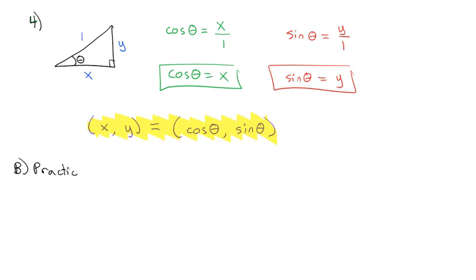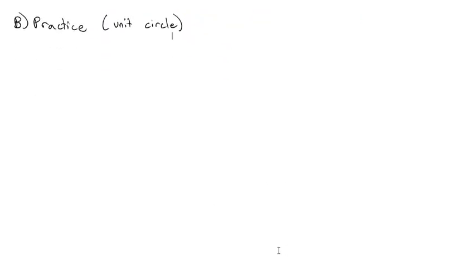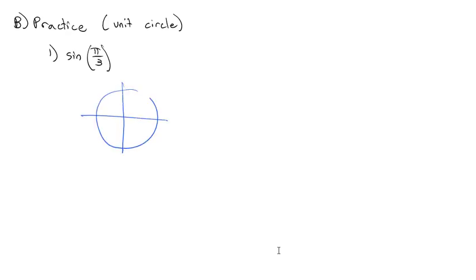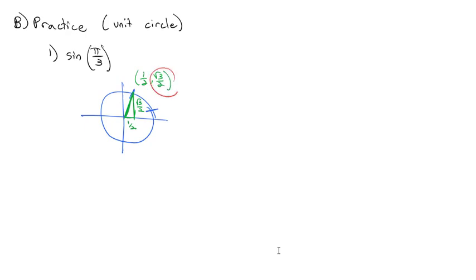Let's practice. Find the sine of π/3. π/3 is 2/6, so counting 2 sixths around the circle puts us in the first quadrant. We know the short distance is 1/2 and the long distance is √3/2, both positive, giving coordinates (1/2, √3/2). Sine is the y-coordinate, so the sine of π/3 is √3/2.